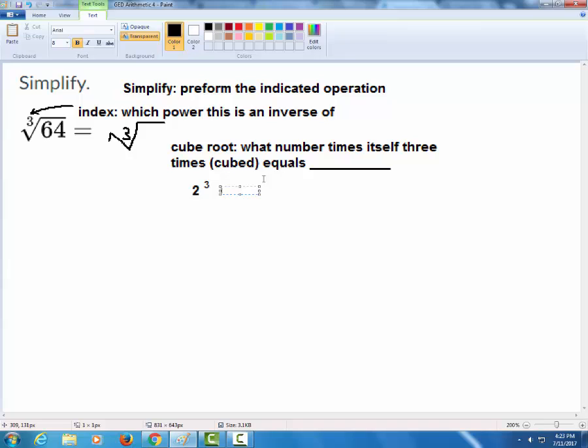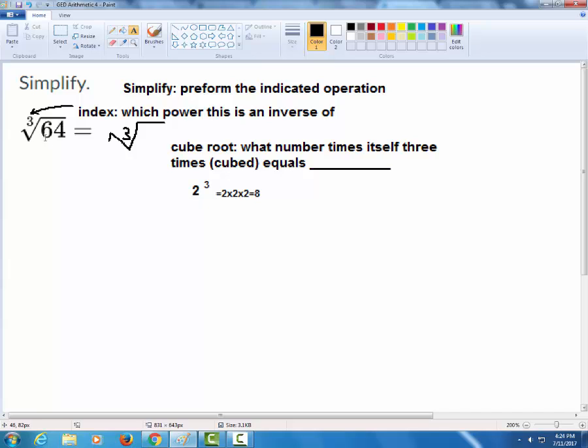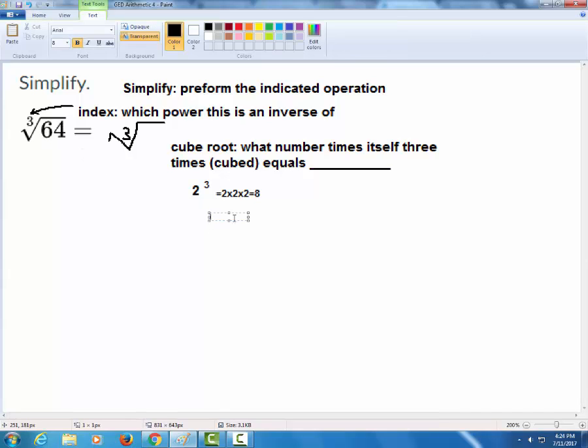So imagine I had this problem two cubed. Well what does it mean? We know that we can write powers out in the expanded form. We can turn that into repeated multiplication. In this case two cubed would mean two times two times two. See what I'm saying about what number times itself three times. This is the number two multiplying by itself three times. And of course if we do that math two times two would be four. Multiplying that by another two would be eight. Clearly the cube root of 64 is not two because two times two times two is not 64.